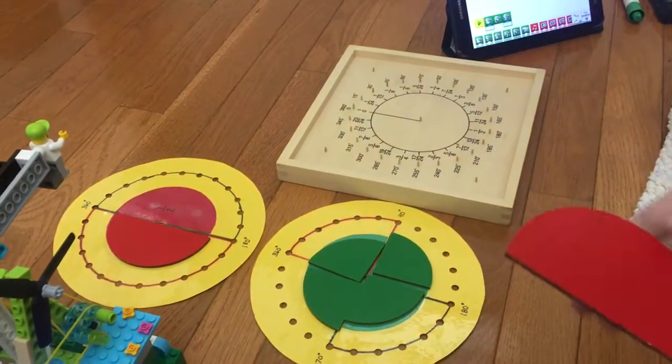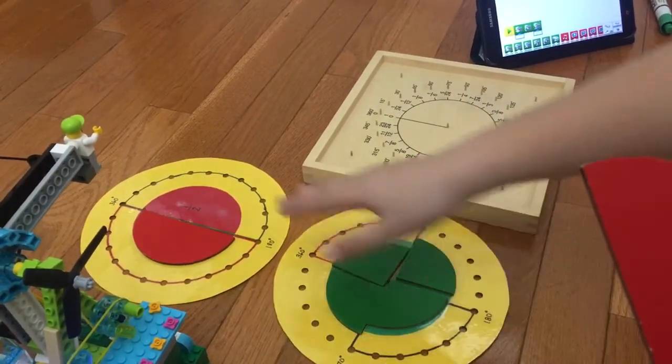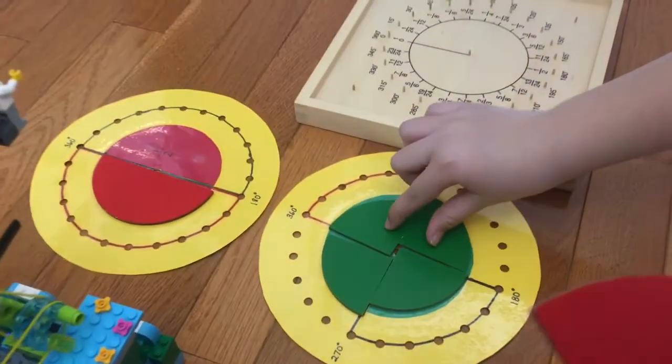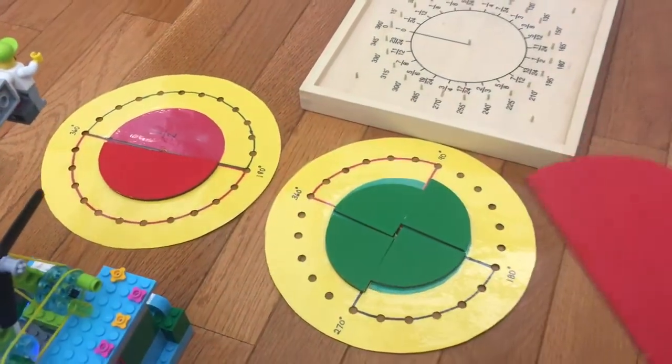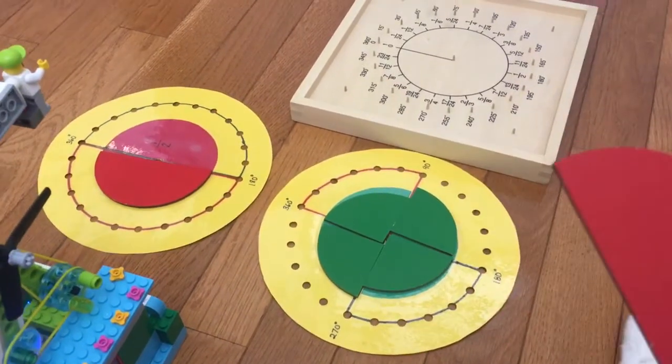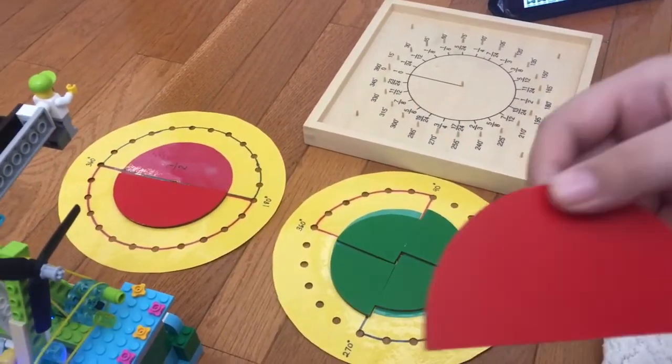That would be a half of the pizza, wouldn't it? If you can't see this, there's fourths right here and halves are right here. We put these on the board. So you learned this years ago, didn't you? Would you put that back?